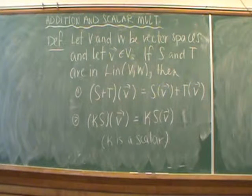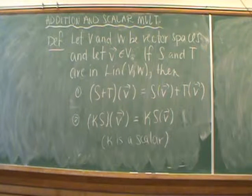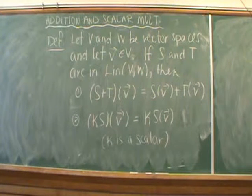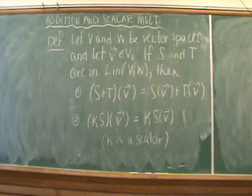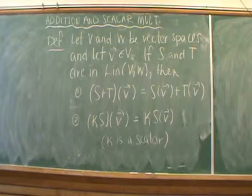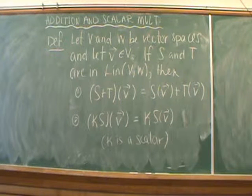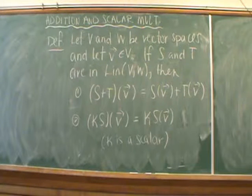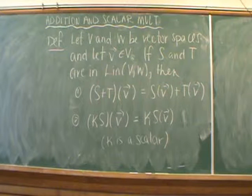Let's start with addition and scalar multiplication. V and W are vector spaces and v is an element inside the vector space V. If S and T are inside that set of linear transformations from V to W, we can define addition and scalar multiplication as follows: S plus T acting on v is defined to be S acting on v plus T acting on v. For scalar multiplication, kS acting on v is defined to be k times S acting on v.